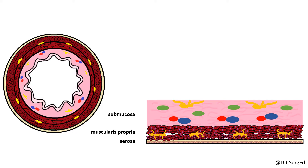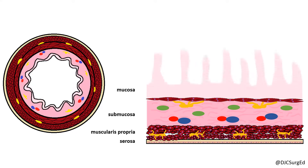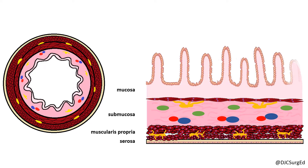The mucosa can be divided into three layers: a muscularis mucosa, lamina propria, and epithelial layer. The muscularis mucosa is a thin layer of muscle that separates the mucosa from the submucosa.